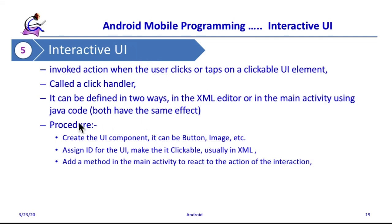The procedure is: first, create a UI component — it can be a button or an image to interact with. Then assign an ID to the UI component and make it clickable so it will execute something. Then add methods in the main activity to react to the action.